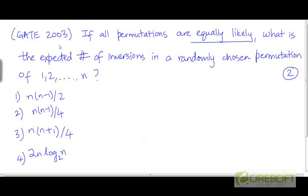This is a problem from GATE 2003 for two points. If all permutations are equally likely, what is the expected number of inversions in a randomly chosen permutation of the numbers 1 to n? If you want to try this problem at this stage, you can do so by pausing the video.